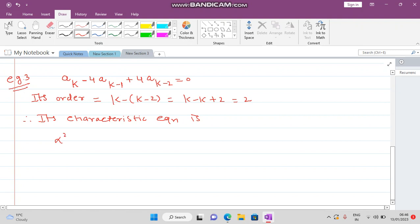This can be written as alpha squared minus 2 alpha minus 2 alpha plus 4 equals 0. What do you get? (alpha - 2)(alpha - 2). So what are the values of alpha? 2 and 2. Here we have repeated roots, so for repeated roots we write the solution as